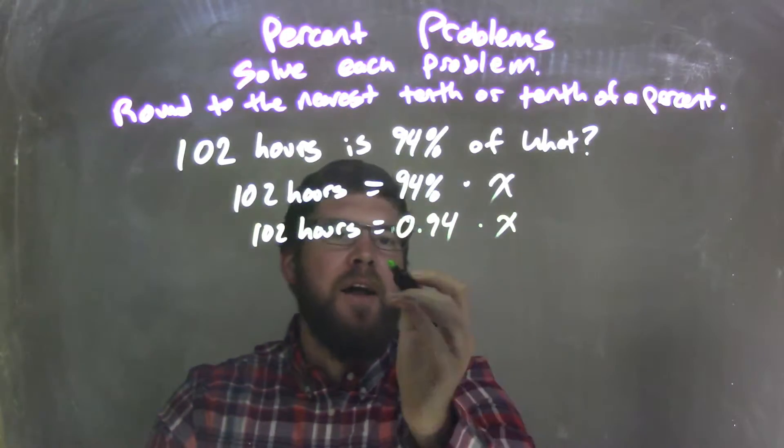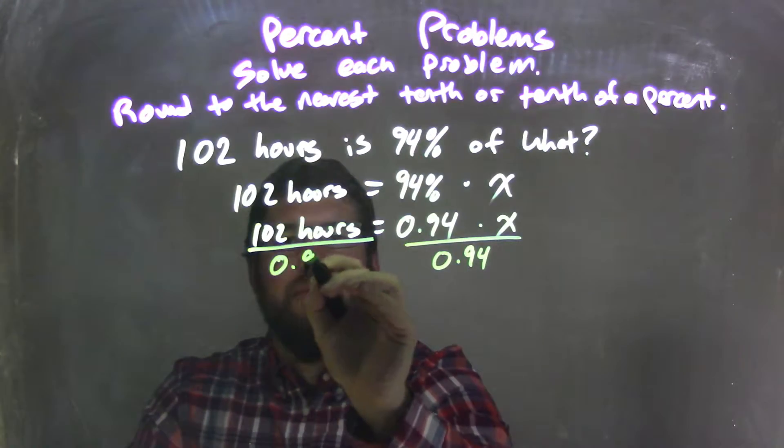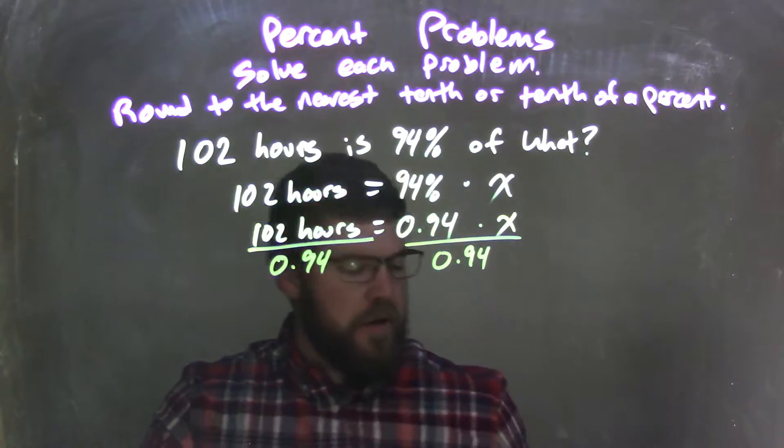From there, I need to divide 0.94 to both sides, leaving me with, well, let's see what our calculator here says.